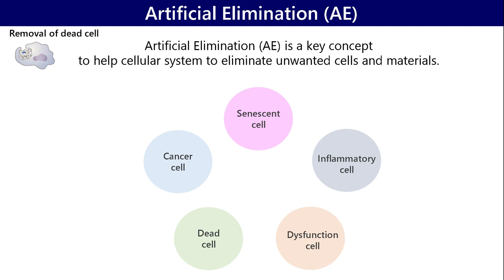Although renovation is quite important and daily renovation is regulated in our body, cells sometimes cannot eliminate unwanted cells or materials. In that case, artificial elimination is quite important — it is a key concept to help cellular systems eliminate unwanted cells and materials. We are trying to establish a modality to eliminate unwanted cells and materials throughout the body, and by doing so, perhaps even diseases can be prevented.